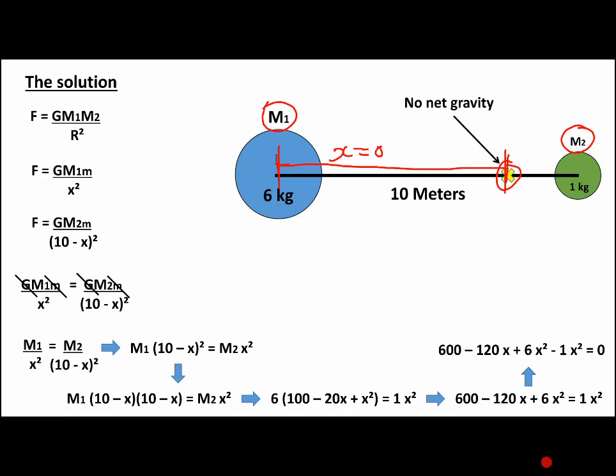So now all we have to do is collect like terms and rearrange it into our quadratic formula. And there we have it. So 5X squared minus 120X plus 600 equals zero.